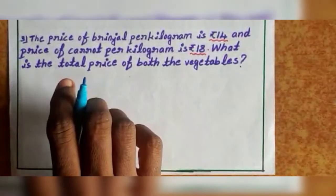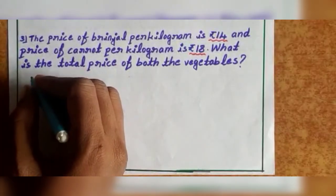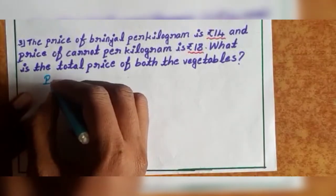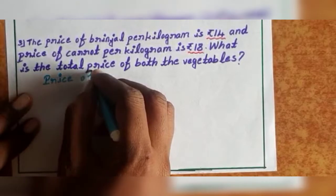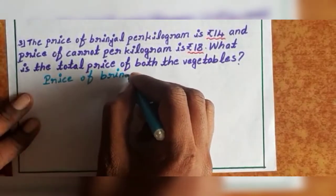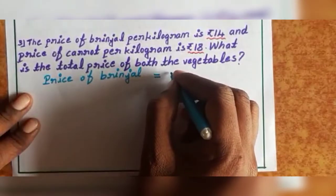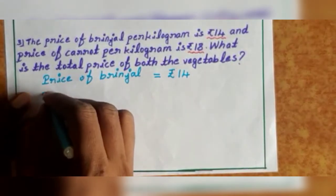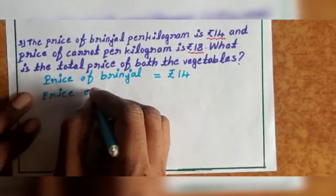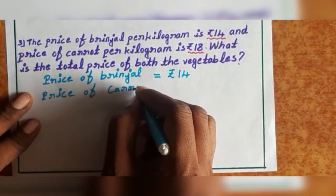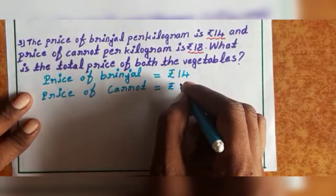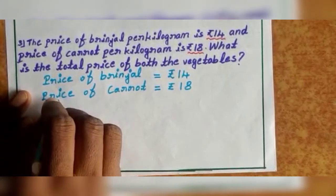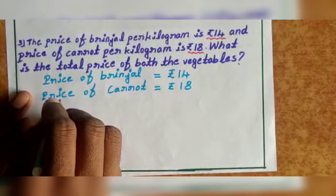First, write: price of brinjal — 14 rupees. Next: price of carrot — 18 rupees. Next: total price.